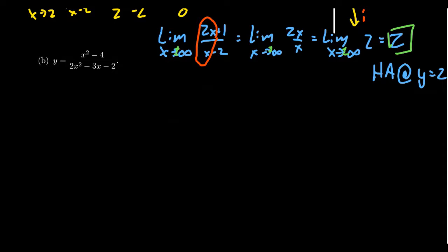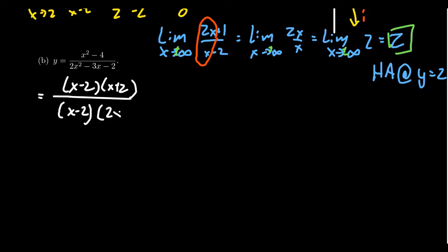Let's look at a more complicated example: y equals x squared minus 4 over 2x squared minus 3x minus 2. It is important to factor. The numerator factors as x minus 2 times x plus 2 — a difference of squares. The denominator requires reverse FOIL and factors as x minus 2 times 2x plus 1.